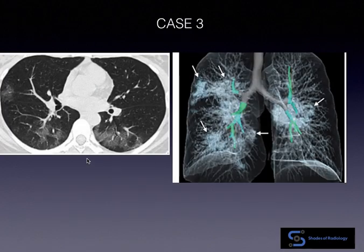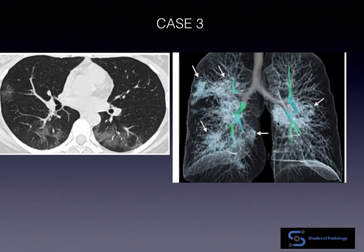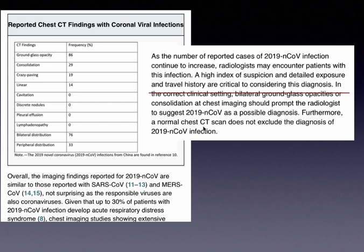Another proven case of coronavirus shows patchy areas of ground glass opacities in bilateral lung fields, peripherally placed. A 3D volume rendered image done a few days later shows increased ground glass opacities bilaterally. In this study, they found ground glass opacity was the most common finding. As disease progresses, consolidation develops, crazy paving was observed in some patients, and linear opacities indicating interlobular septal thickening were seen in viral pneumonia.